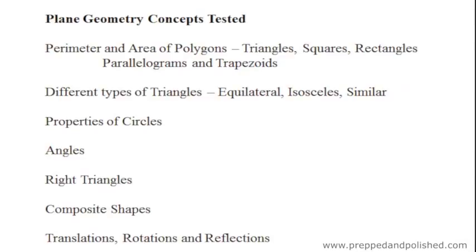The plane geometry concepts include the perimeter and area of polygons: triangles, squares, rectangles, parallelograms, and trapezoids. You should know the formulas to find the areas of these shapes. Different types of triangles include equilateral, isosceles, and similar triangles.